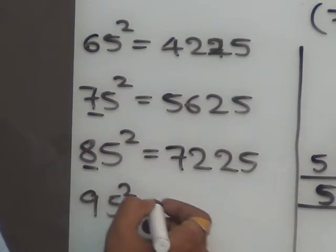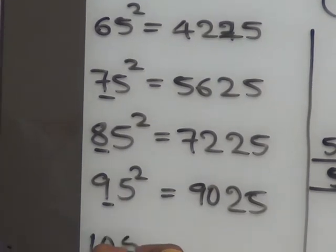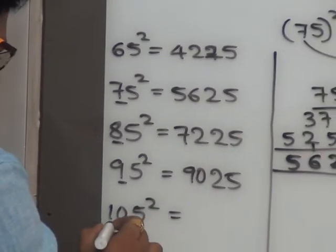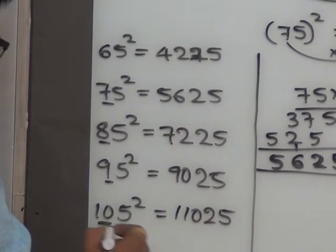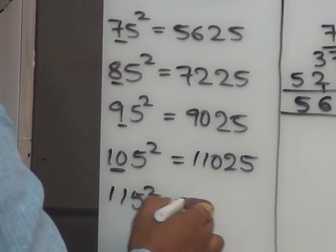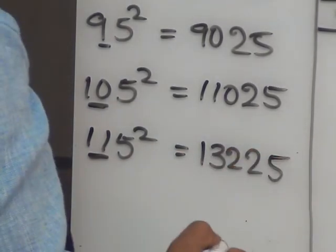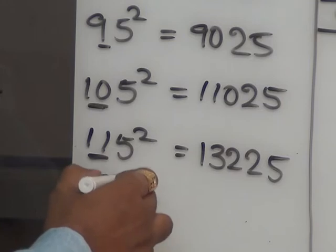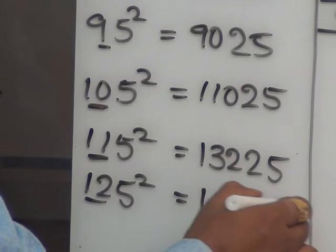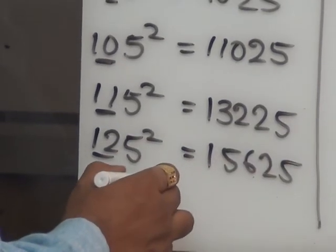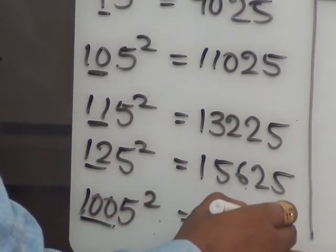95 square — 9 into 10, answer is 9025. Suppose 105 square — yekad 10 ondi, next number 11. 10 into 11 is 110. Answer is 11025. 115 square — yekad 11 ondi, 11 into 12 is 132. Answer is 13225. 125 square — yekad 12 ondi. 12 into 13 is 156. Answer is 15625. Suppose 1005 square — 100 into 101 is 10100. Answer is 1010025.